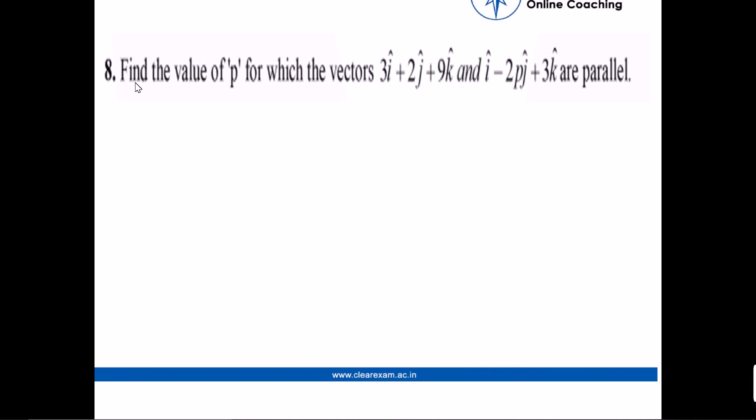Our 8th question is find the value of P for which the vector 3i plus 2j plus 9k and i minus 2pj plus 3k are parallel. So we have to find the value of P for which these two vectors are parallel. Let's jump into the answer.